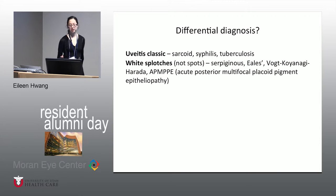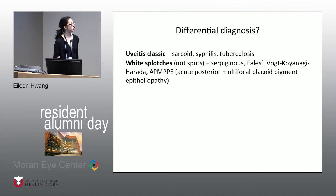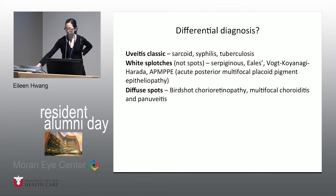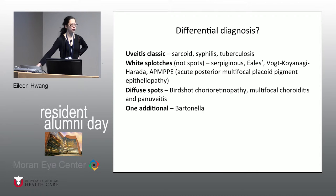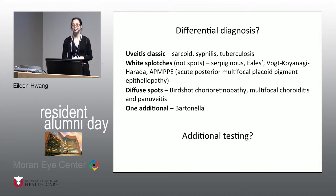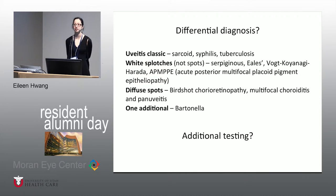We should also consider EELS, because anytime something looks like serpiginous we've got to consider it could be infectious related to TB. Also VKH and AMPI, because of the placoid nature of that central lesion in the right eye. Bartonella can also cause a chorio-retinitis that looks like this. For additional testing, FA and ICG are things we do for all these inflammatory diseases.